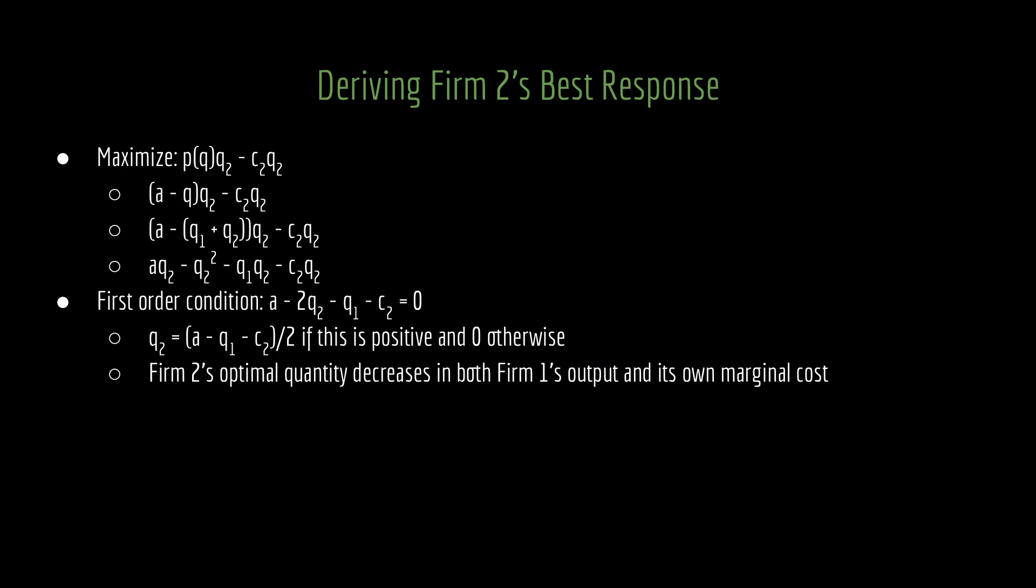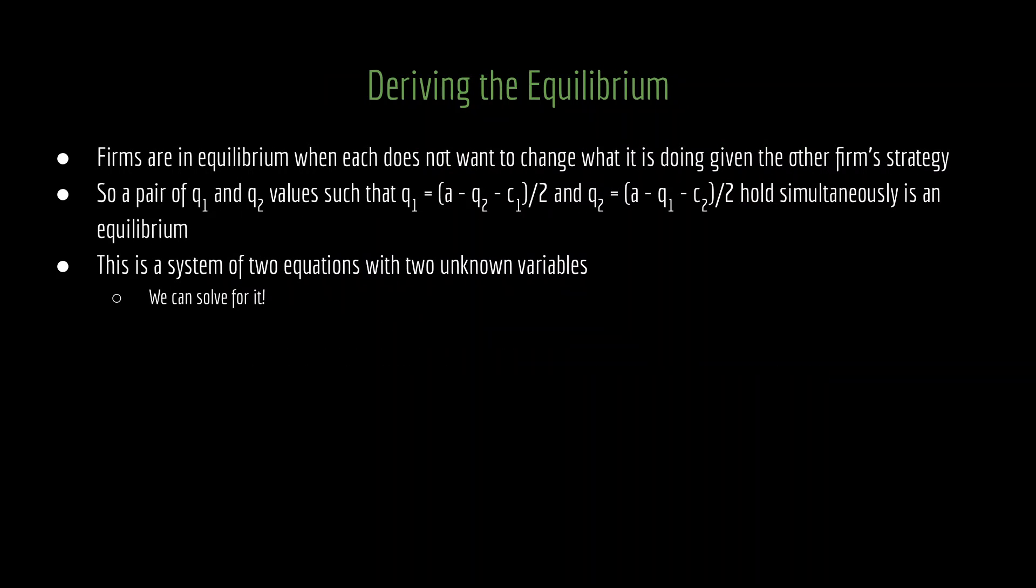We've derived firm one's best response and firm two's best response. The last thing to do is find a mutual best response. To derive the equilibrium, firms are in equilibrium when each does not want to change what it is doing given the other firm's strategy. As such, a pair of q1 and q2 values such that both best response functions hold simultaneously is an equilibrium. You might think that's going to be hard to get at, but in fact this is straightforward. This is a system of two equations with two unknown variables. Because these are unique equations, we can solve for them and then we'll be done.